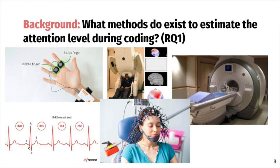The main question answered by the systematic literature review was what methods exist to estimate the attention level during coding. We found out that there are a lot of methods, for example: heart rate variability, galvanic skin response, pupil diameter, eye blink frequency, brain activity measurement, EEG, MEG, fNIRS, ECoG, fMRI, and many others. Some methods are less accurate, some more, and some are difficult to apply in real conditions during programming. We found out that EEG is one of the most promising, because it provides an ability to study the functional state of the core of the nervous system — the brain — and could be used in a real environment since it is portable.